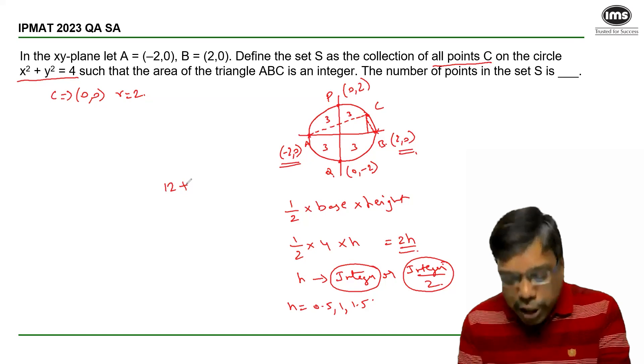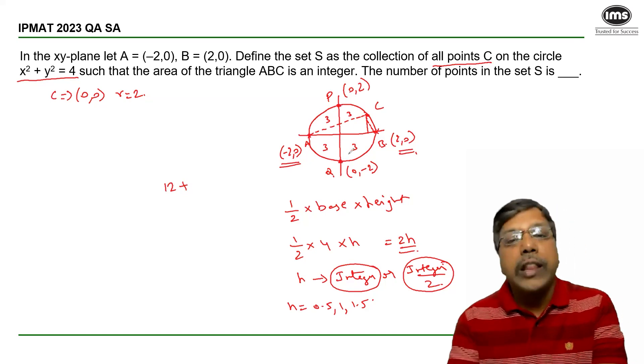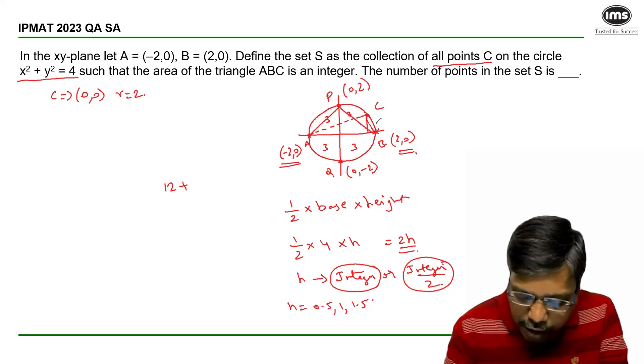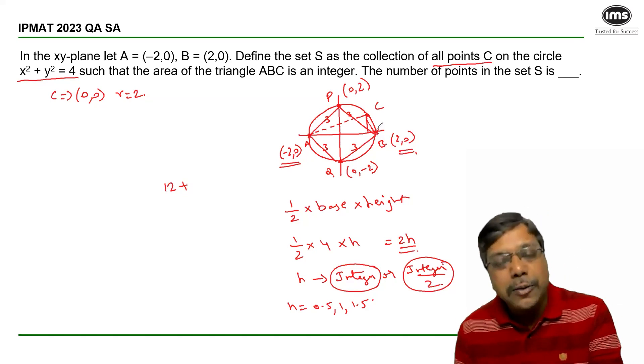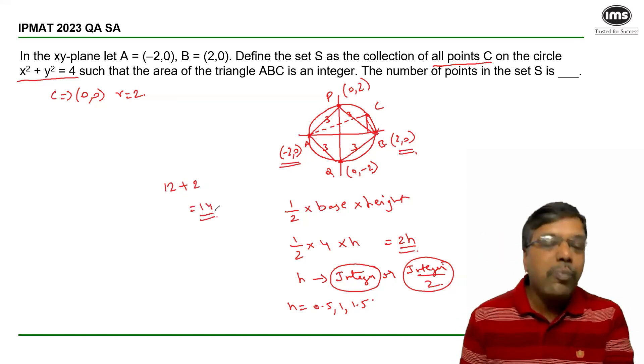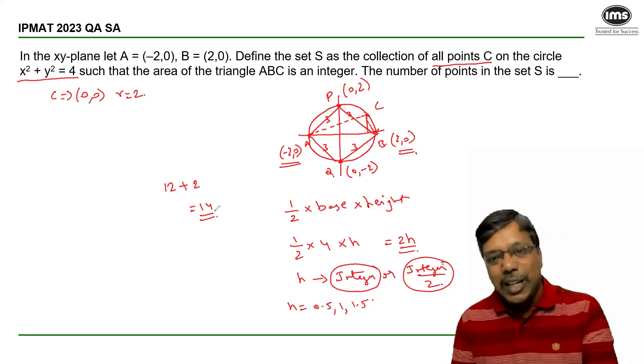In addition to that, obviously the points P and Q which are on the y-axis also form a triangle with A and B where the area is an integer. So 12 plus 2, a total of 14 points will be there on the circle that satisfy the given condition.